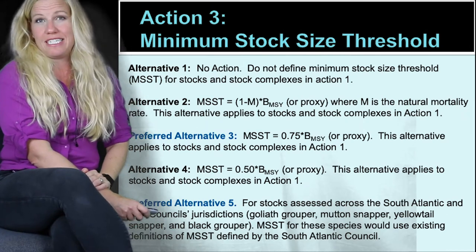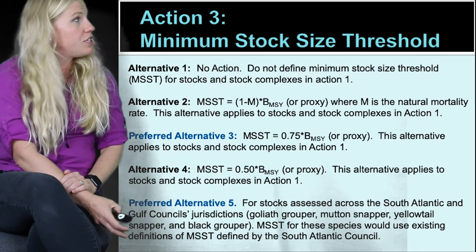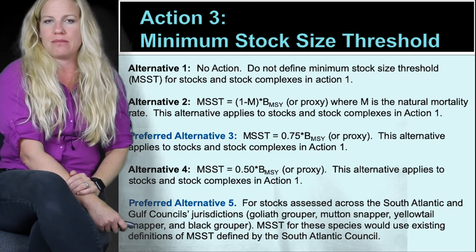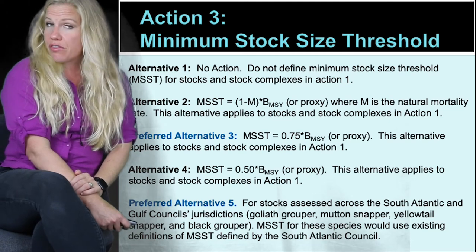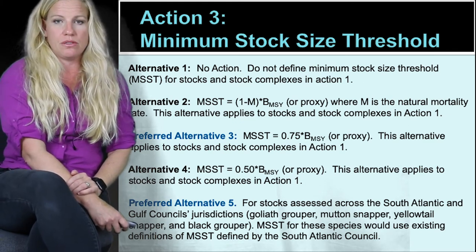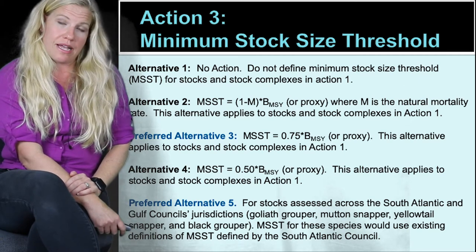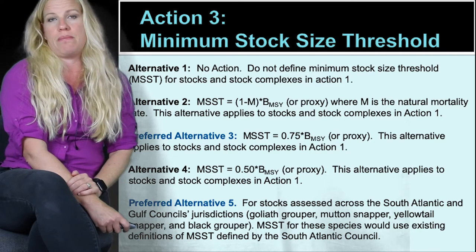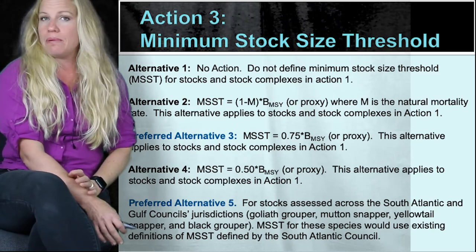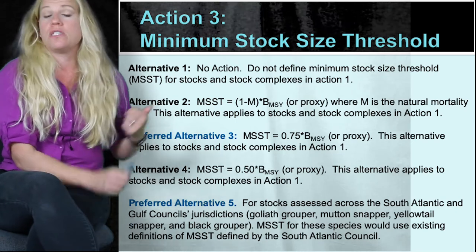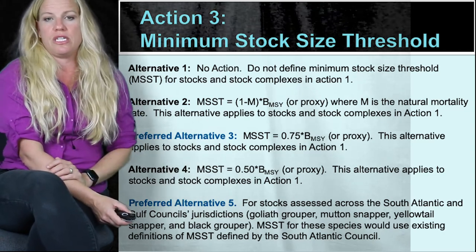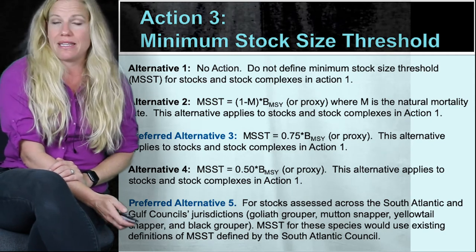There are a number of different alternatives. Alternative one is the no action alternative. Alternative two would set the minimum stock size threshold at one minus the natural mortality times the biomass at maximum sustainable yield. Preferred alternative three would set the minimum stock size threshold at 75% of the biomass at maximum sustainable yield. Alternative four would set it at 50% of the biomass at maximum sustainable yield. Alternative five, also a council preferred, would apply only to stocks assessed across both the South Atlantic and the Gulf — Goliath grouper, mutton snapper, yellowtail snapper, and black grouper — setting the minimum stock size threshold using existing definitions from the South Atlantic Council.